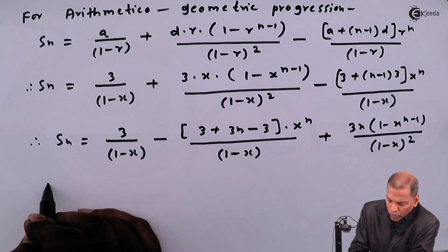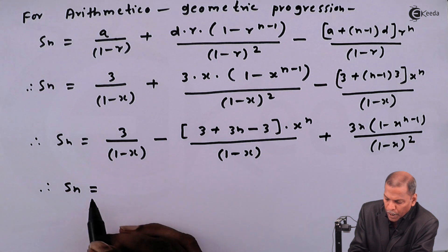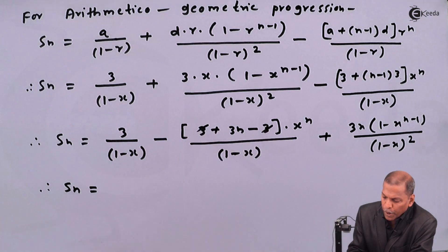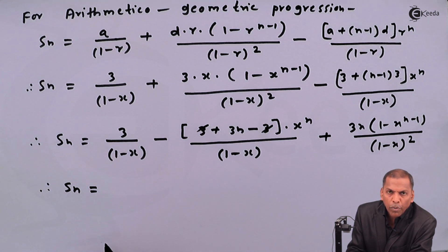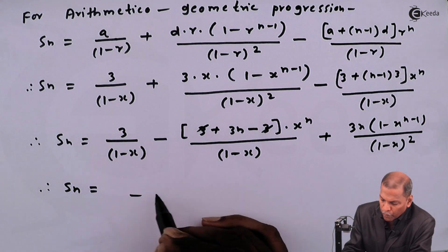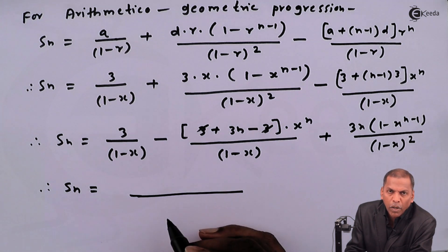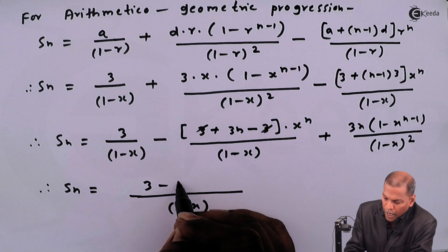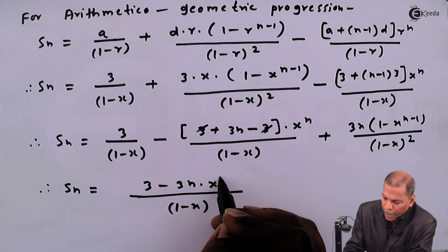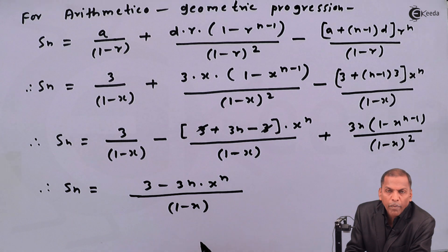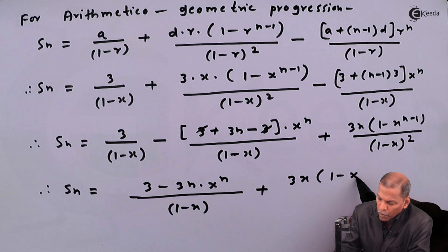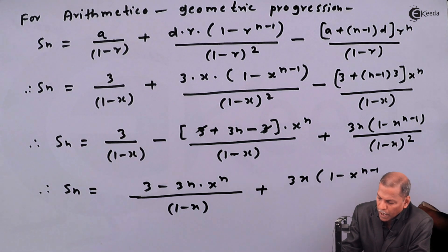Therefore S_n: in the second term, minus 3 and plus 3 cancel, and the denominators of both the first two terms are the same, that is (1 minus x). So we take (1 minus x) as LCM for the first two terms, giving: (3 minus 3n·x^n) upon (1 minus x), plus 3x·(1 minus x^(n-1)) upon (1 minus x)².